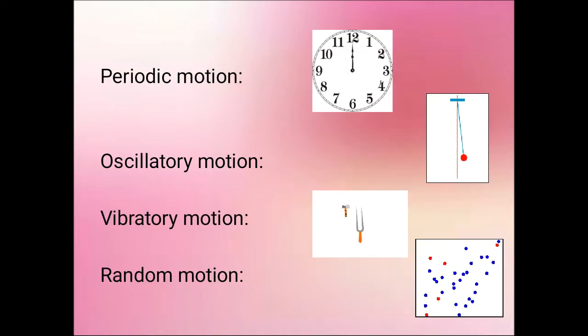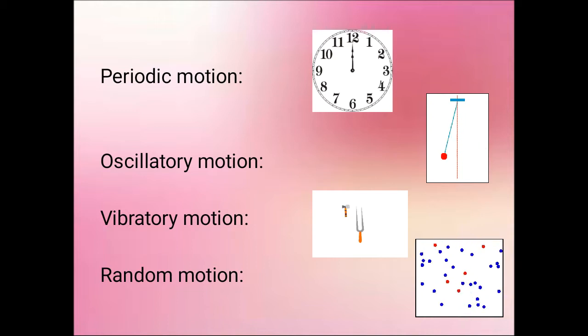If an object moves in particular period of time again, it moves in a particular interval of time. It is said to be in periodic motion. The to and fro motion of an object is called oscillatory. Then vibratory, if we hit something, if we hit an empty vessel or if we hit a string, it will start to vibrate, that tends to be vibratory motion. And in random motion, the object will exhibit random path. It doesn't show any definite paths.